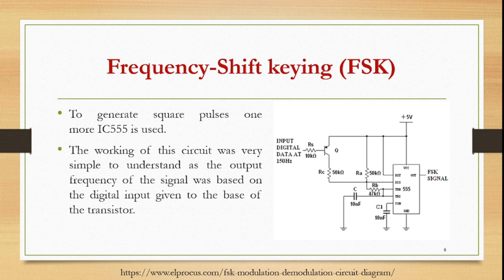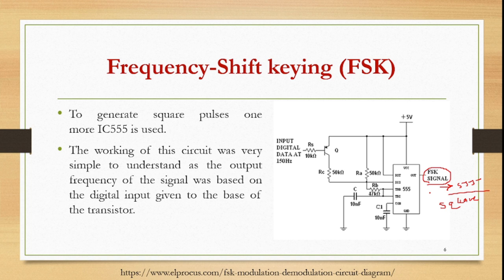To generate the square pulses, we need to add another 555 circuit which will produce the square waveforms. The output of this 555 is based on the digital signal fed to it. That signal makes the transistor turn on and off, producing two frequencies called mark and space.